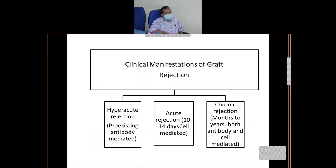The third one is chronic rejection. Chronic rejection may take months, years. Already I told that only 50% of grafts will survive after 10 years. That means after 10 years also, the immune system can activate and cause rejection. Chronic graft rejection's exact cause is not known — it may be both cell-mediated as well as antibody-mediated immune response.